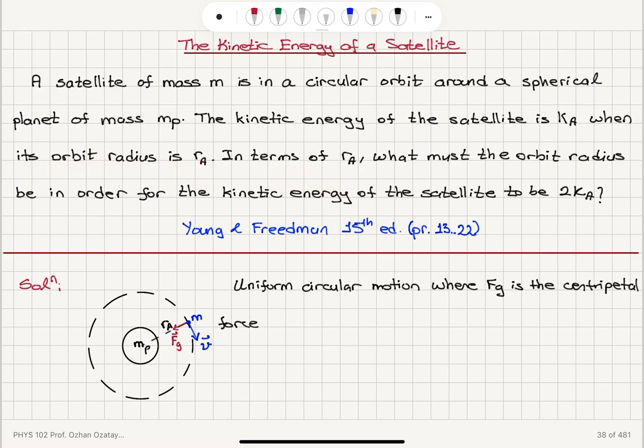The kinetic energy of the satellite is k sub a when its orbit radius is r sub a. In terms of r sub a, what must the orbit radius be in order for the kinetic energy of the satellite to be twice k sub a?